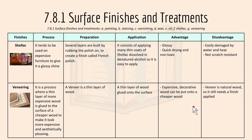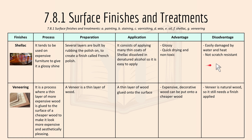Lastly, we have shellac and veneering. Shellac tends to be used on expensive furniture to give it a glossy shine. For preparation, several layers are built by rubbing the polish on to create a finish called the French polish. For application, it consists of applying many thinner coats of shellac dissolved in denatured alcohol, so it is easy to apply. Advantages include it's glossy, quick-drying, and non-toxic. The disadvantage is it's easily damaged by water and heat, and it's not scratch-resistant.